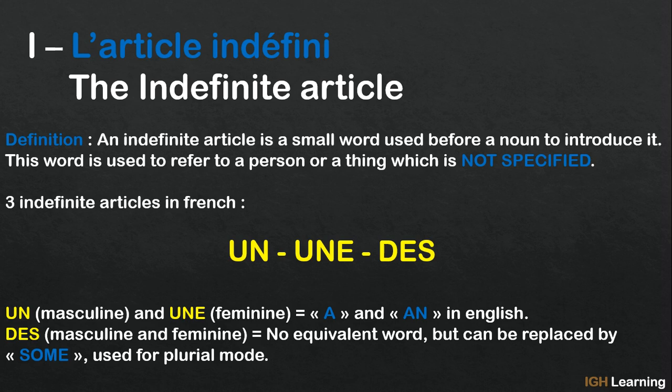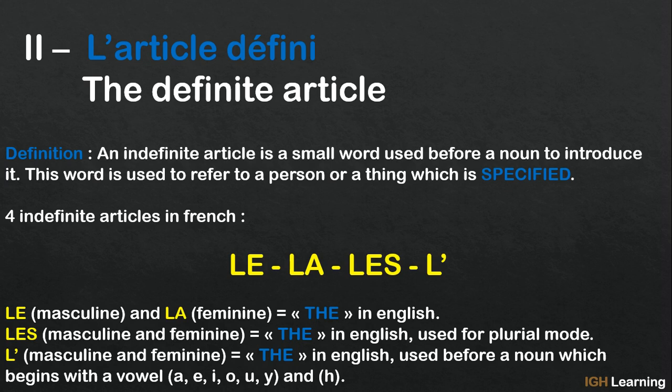Now let's talk about the definite article in French, l'article défini. A definite article is a small word used before a noun to introduce it. This word is used to refer to a person or a thing which is specified. So for the indefinite article it was not specified, but for the definite article it is specified.